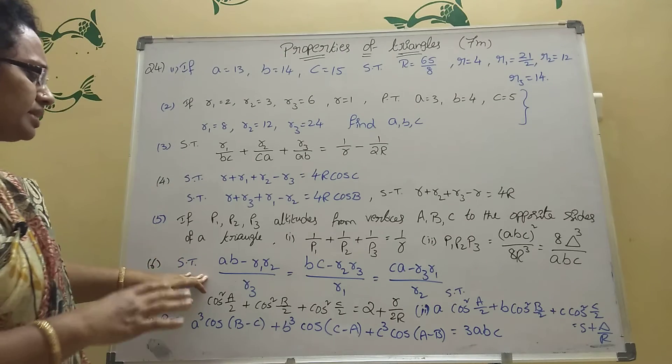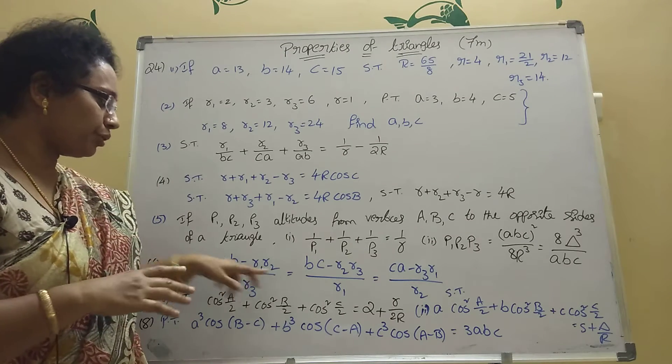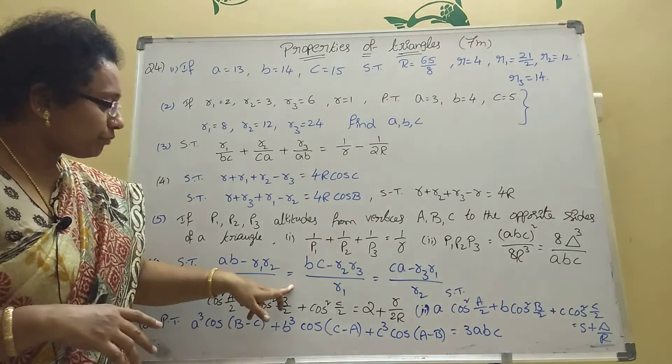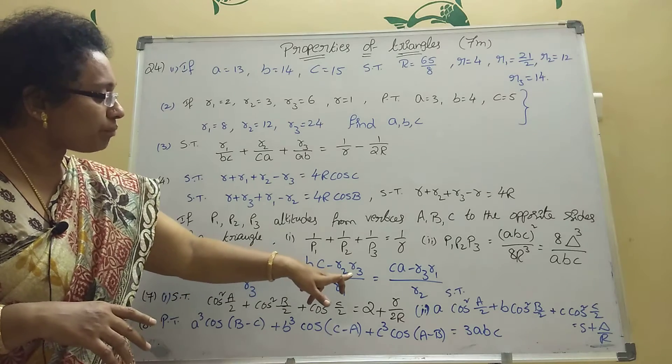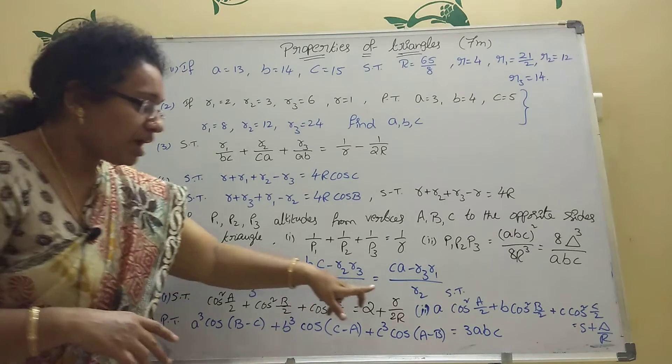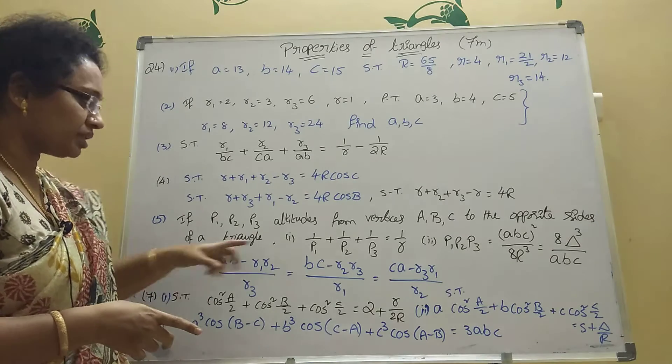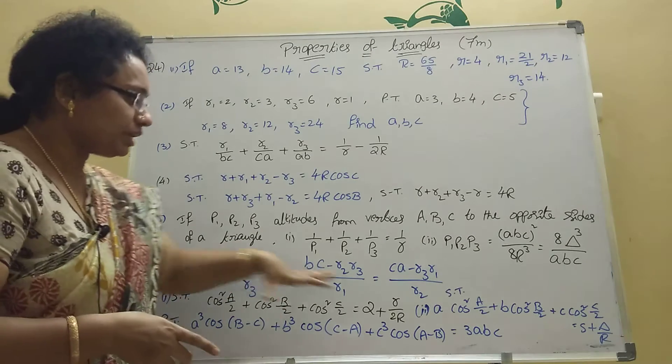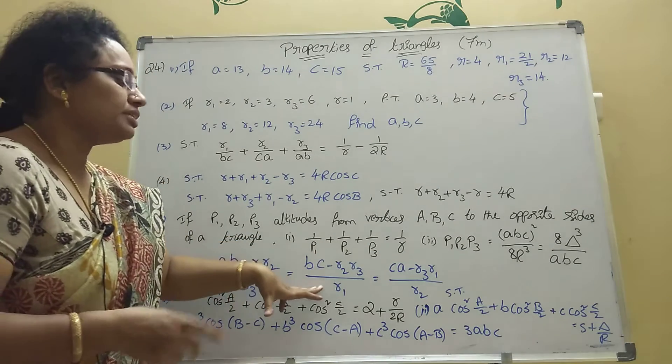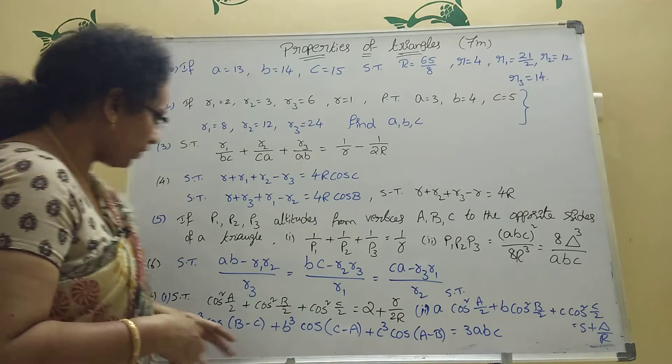Next sixth one. Sixth one is AB minus R1 R2 divided by R3 equal to BC minus R2 R3 by R1, and also equal to CA minus R3 by R1 equal to R2. This is also important. Here three equals are there, should find first one, second one, then similarly should write third one.